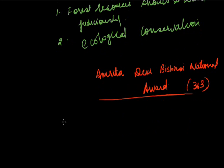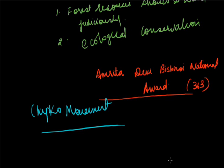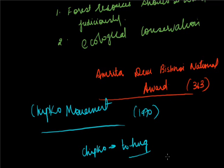Chipko movement: During 1970 in Reni village of Garhwal, a contractor was allowed to cut trees in a forest near the village. When the contractor's workers went to the forest to cut trees, the women of the village hugged the tree trunks to prevent the workers from cutting trees. Chipko literally means to hug. They embraced or hugged the trees so that they should not be cut down. This movement started by villagers hugging trees is called Chipko Andolan or Chipko movement.